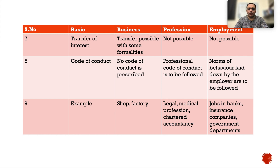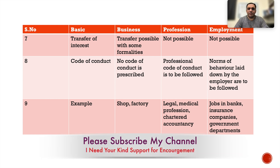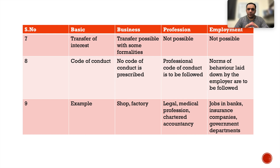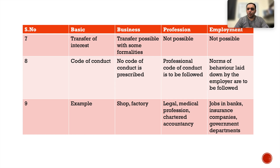Regarding code of conduct: in business, no code of conduct is prescribed; in professionalism, a professional code of conduct must be followed; in employment, norms of behavior laid down by the employer are to be followed. Examples: business — shop and factory; profession — legal, medical, chartered accountant, or teacher; employment — jobs in banks, insurance companies, or government departments.